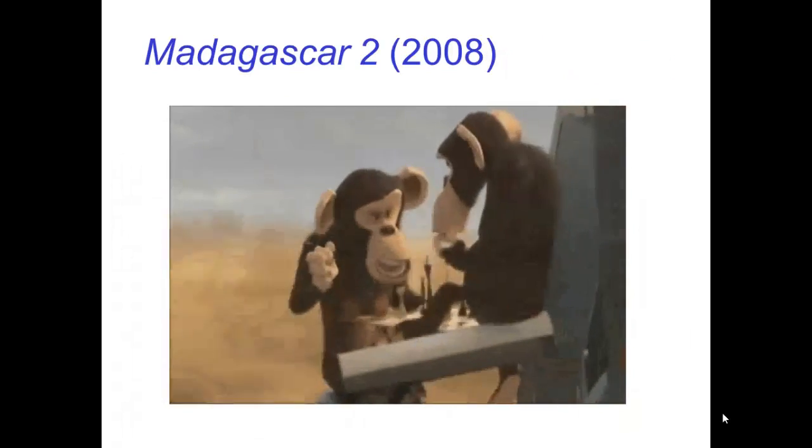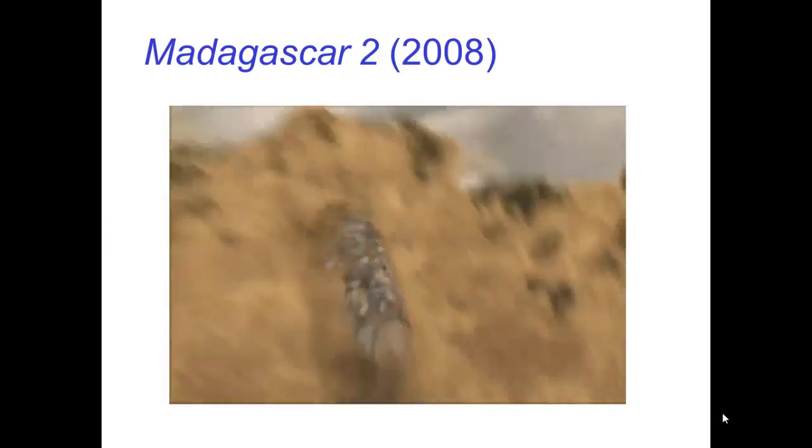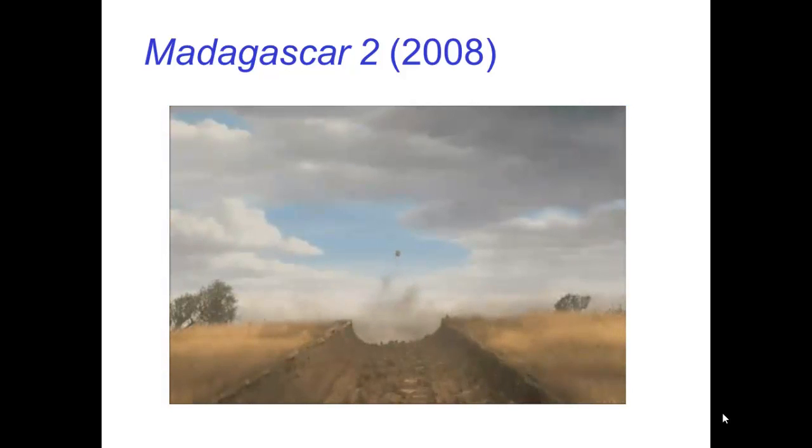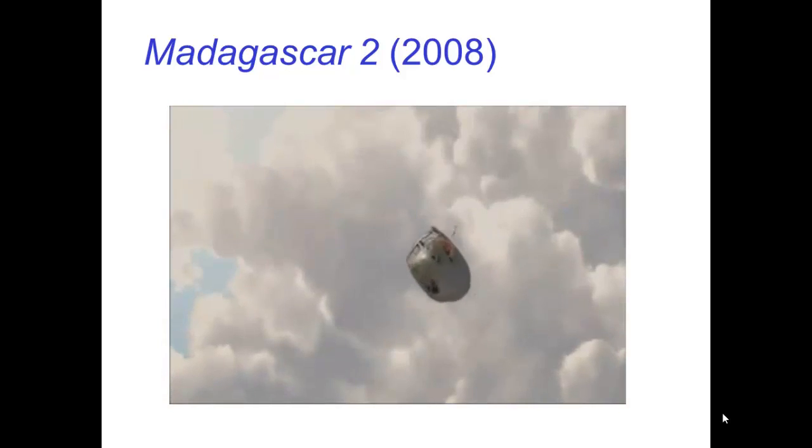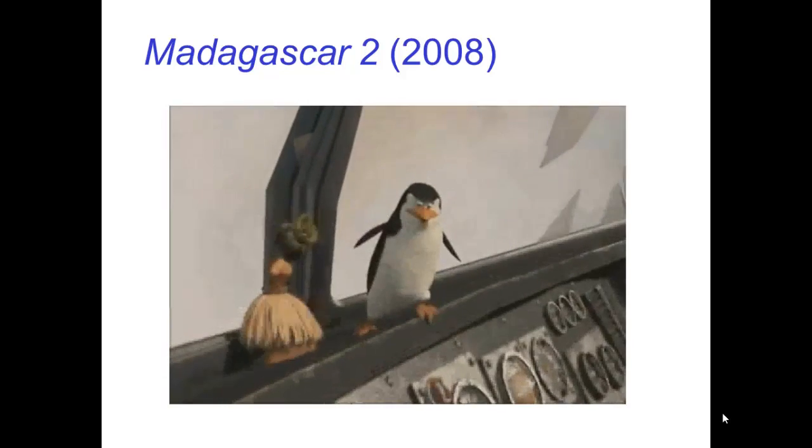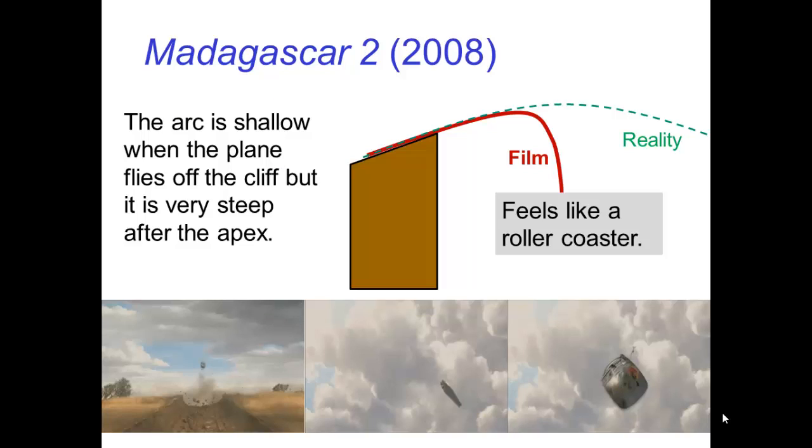Let's look at another path of action seen in perspective, specifically from the plane crash scene in Madagascar 2. Notice that the arc is shallow when the plane flies off the cliff, but it is very steep right after the apex. This path of action is similar to the plunging motion of a roller coaster, which makes it more exciting than the realistic path of action. Again, the animators had good reasons for bending the laws of physics.